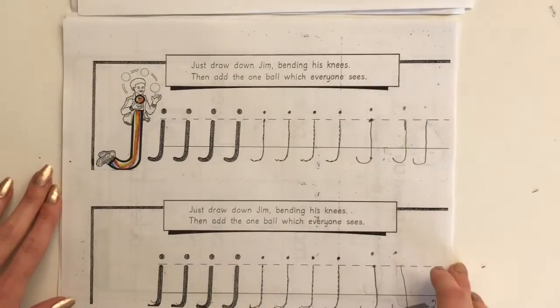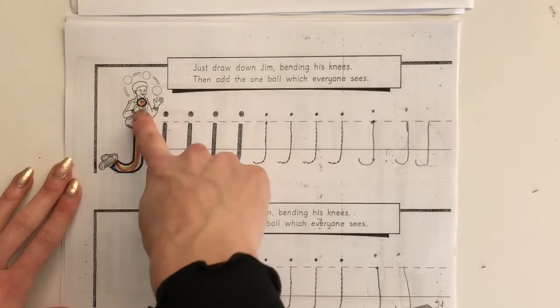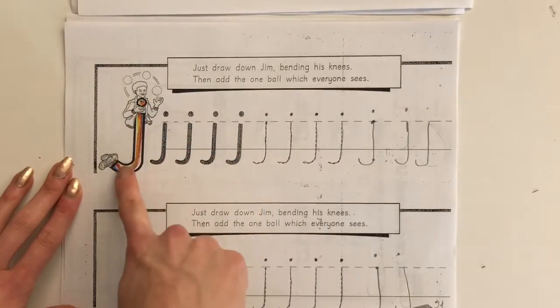Letter J, jumping gym. We're going to make his sound start in the middle of his body, go straight down, J.